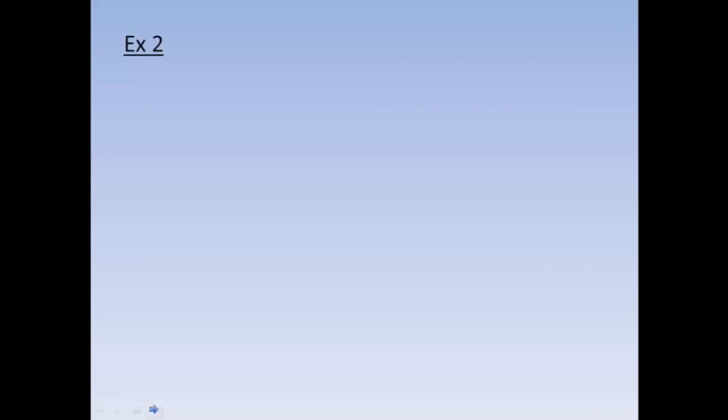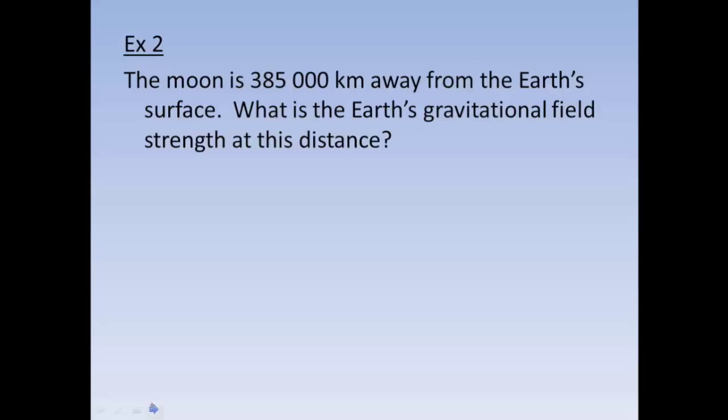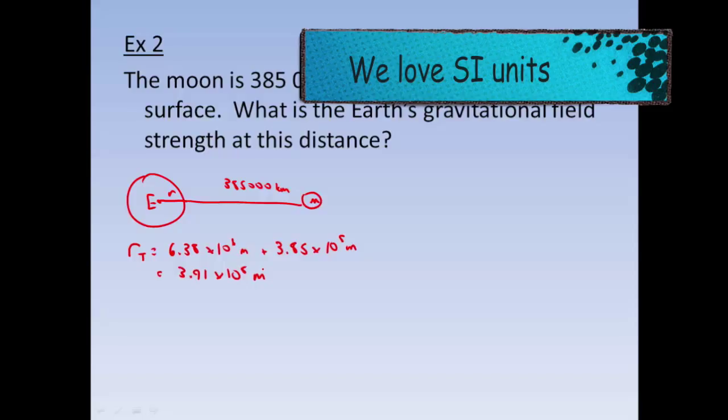Let's take a look at another example. This one's a bit trickier, but not overly tricky. The moon is 385,000 kilometers away from the Earth's surface. What is the Earth's gravitational field strength at that distance? So, if we were to draw the picture, we're saying here's the Earth and here's the moon. And we're saying that from the Earth's surface to there, that's 385,000 kilometers. Well, we want to know what is Earth's gravitational field strength at that distance. Okay, well, problem is we have to include this little distance here, our value of r. So our total distance, we'll say r_T, is equal to the radius of the Earth, which is 6.38 times 10 to the 6 meters, plus 385,000 kilometers. But we have to change that to meters, and that's 3.85 times 10 to the 8 meters, to give us a value of 3.91 times 10 to the 8 meters.